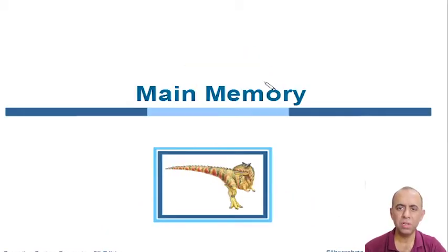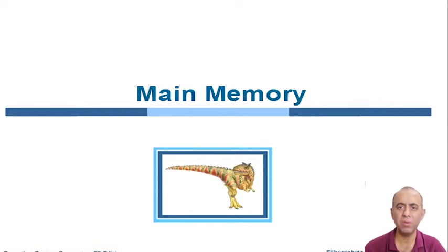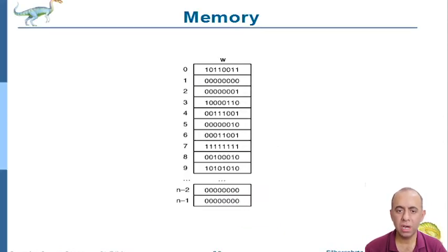Before we move any further, we need to understand what main memory is. Main memory is just a contiguous array of locations — an array of different memory locations which are addressable. You can read or write to these locations using an address. This is the concept of main memory, probably the simplest component in a computer system.